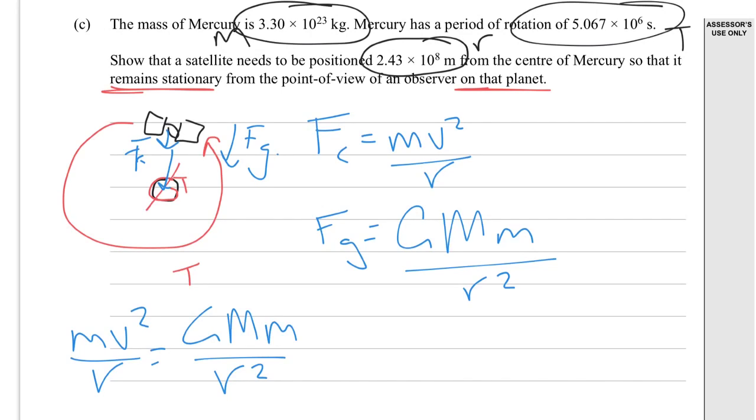So we've got mv squared over r equals GMm over r squared, and we're equating these because the centripetal force acting on the satellite is going to be the same as the force due to gravity on the satellite that's acting at the radius from there, which you'll notice they've stated that this is the distance from the centre of Mercury. So we don't actually have to account for the surface and how far it is above the planet and all that kind of stuff. But anyway, we're going to cancel out the mass, the small mass that is of a satellite.